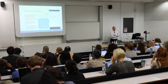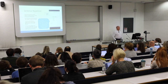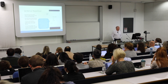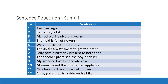This test seems to be highly sensitive to grammatical problems. The child is told they're going to hear some sentences and simply has to repeat each one. We give them twelve sentences, going from very simple ones like 'Joe likes Lego' or 'Babies cry a lot', to longer and grammatically more complex sentences like 'A boy gave the girl a ride on his bike'.